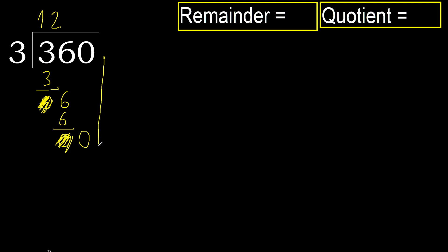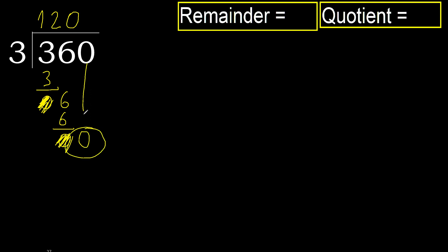Next, bring down 0. 0 is less, therefore next. There is no number, therefore finish it here — complete. Finish with this number. Here, always place 0.